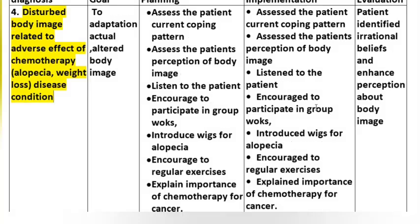Nursing diagnosis number 4 - Disturbed body image related to adverse effects of chemotherapy, for example alopecia and weight loss, and disease condition.